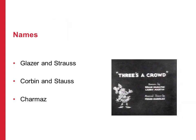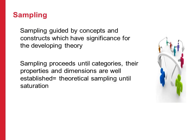Some names that you might come across in your reading on Grounded Theory are Glaser and Strauss, Corbin and Strauss, and Charmaz — each of these would have a different interpretation on the methodology of Grounded Theory. When carrying out a study using Grounded Theory, sampling is guided by concepts and constructs which have significance for the developing theory. Sampling proceeds until the categories, their properties and dimensions are well established — this is called theoretical sampling until saturation.